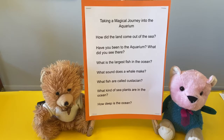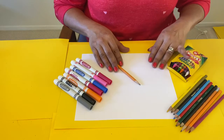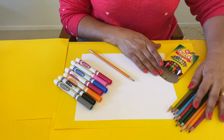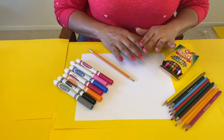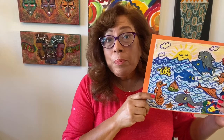Taking a magical journey into the aquarium, here are some great questions to inspire the lesson about all the magnificent sea life and plant life in the ocean. We will be using white paper, a pencil, crayons, colored pencils, and markers. You can use one or all of these. Remember, boys and girls, I am an artist. We are too. There's no mistakes in art. We're just having fun. So let's play.